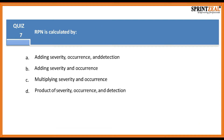Question seven: An RPN is calculated how? By adding severity, occurrence, and detection? By adding severity and occurrence? By multiplying severity and occurrence? Or it's the product of severity, occurrence, and detection?